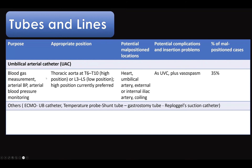For the umbilical arterial catheter, we have two normal positions: high and low. The high position can be remembered by the mnemonic 'October 6' — the half of 10 is 5, the half of 6 is 3 — giving us T6 to T10 for the high position and L3 to L5 for the low position. The high position is preferred because there are fewer branches at that level, whereas the low position is near the renal arteries. Malposition can include the heart, umbilical artery coiling, external or internal iliac artery, or aortic coiling.